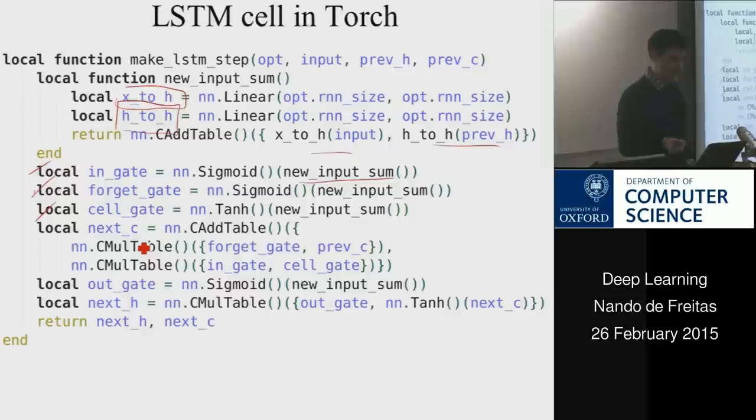next you create a forget gate just the same way, the cell gate, then the C gate is you had to add two things, the forget gate, C mult table, that implements the layer that we just described in the previous slide, entry-wise multiplication, so you do the entry-wise multiplication of the previous C with the forget gate, the output gate is the other layers, and you compute the next H. And so update C, get the next H, and you're done.